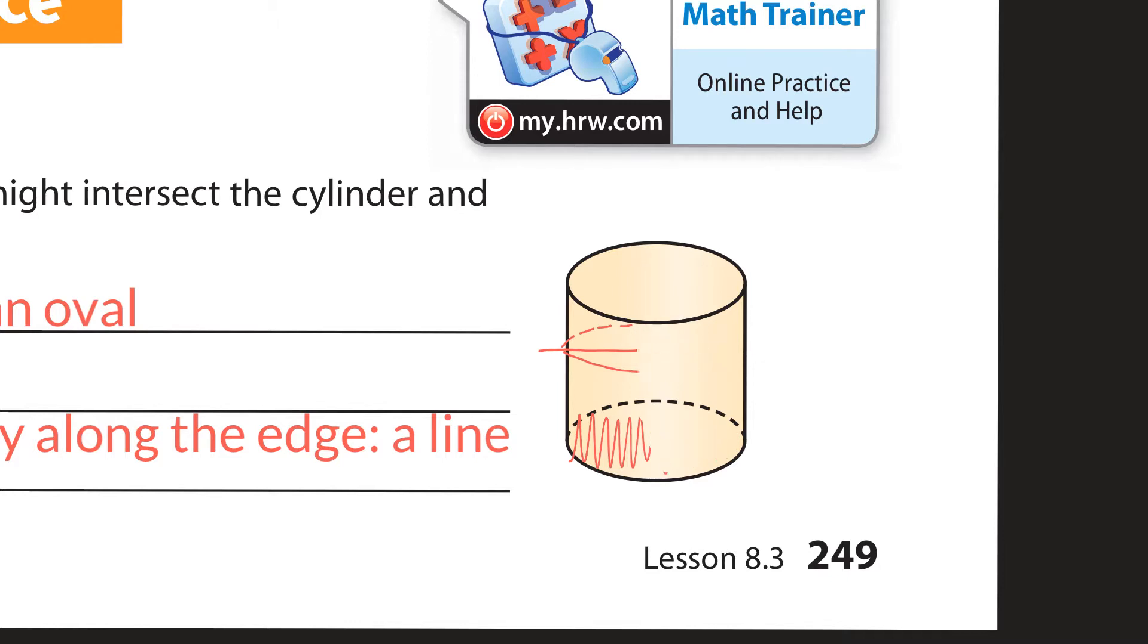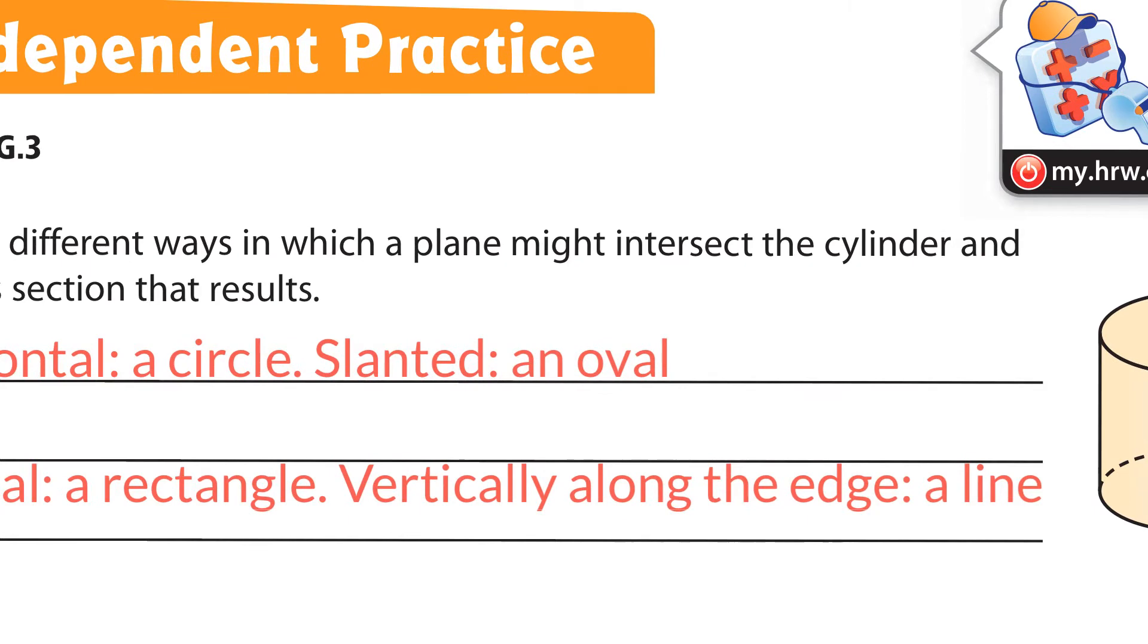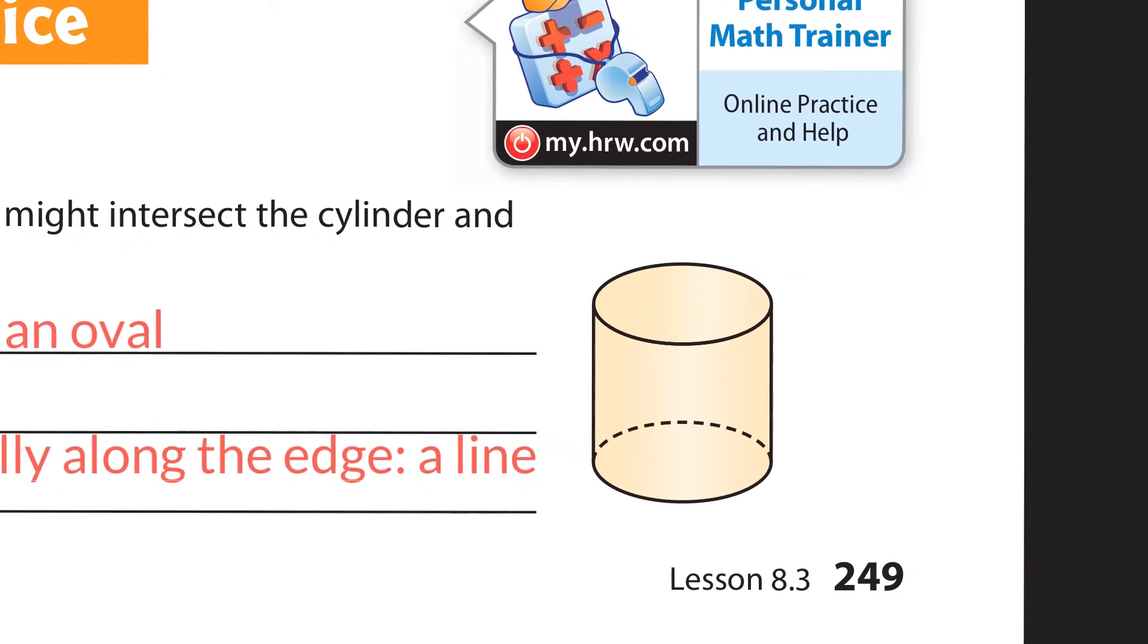I'm going to erase this so I can make the others. The next one is slanted. You would get an oval. So it would be something like that. It's slanted. And so this side would be on the back. And then the front would be something like that, so it would be oval-ish. It wouldn't be exactly a circle. It wouldn't be a rectangle. It'd be somewhere in between.